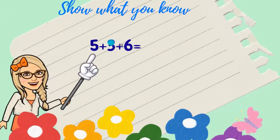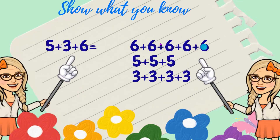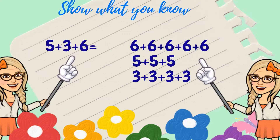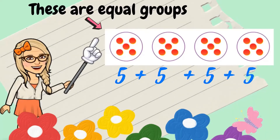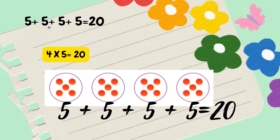Let's show what you know. Can we say that this is a repeated addition sentence? It's not. Very good. In here, we don't have equal numbers — we don't have equal amounts. 5 plus 3 plus 6 is not a repeated addition sentence. In a repeated addition sentence, I always add the same number. Like in this case: 5 plus 5 plus 5 plus 5. How many times am I adding the number 5? Four times. Very good.